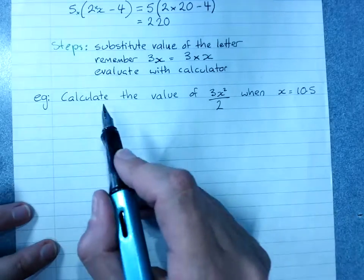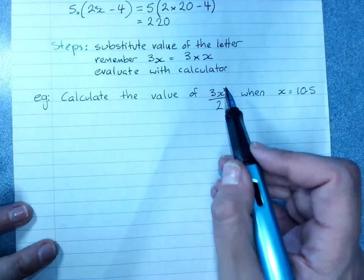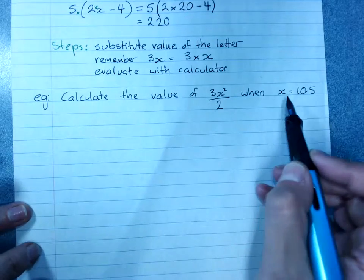So this example, calculate the value of 3x squared divided by 2, when x is 10.5.